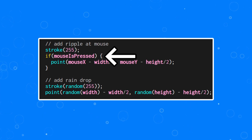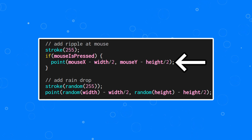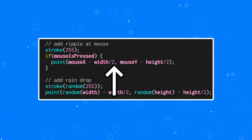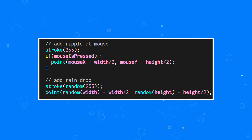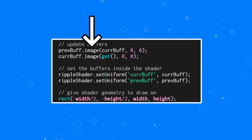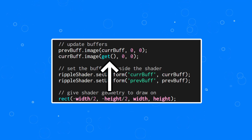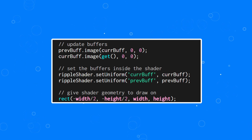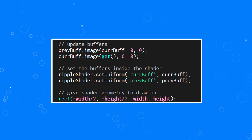Moving on to the draw function, we first check if the mouse is pressed, and if it is, we draw a white point at the mouse location — this will cause ripples to come from the mouse while it's being pressed. Note that I have to offset the mouse location by half the width and height, because in WebGL mode the center of the screen is the zero-zero coordinate. I also add another point randomly somewhere on the canvas at a random brightness value, and this creates the raindrop effect. Then we get into the buffer swapping. Since our buffers are graphics objects, this is actually incredibly straightforward. We use the image function to draw our current buffer into the previous one, and then use the get function to get the current frame and draw that into our current buffer. We can then use set uniform again to set the current and previous buffers into our shader, and drawing a rectangle on the screen will trigger our shader to run and create the water ripple effect.